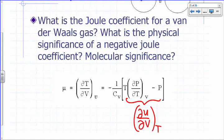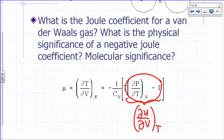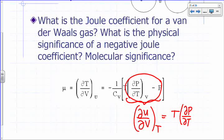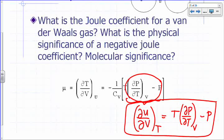We haven't actually derived this expression — like I said, we can't derive this until we get to the second law. But we did say that the thermodynamic equation of state is: partial of U with respect to V at constant T equals T times (partial of P with respect to T at constant V) minus P.